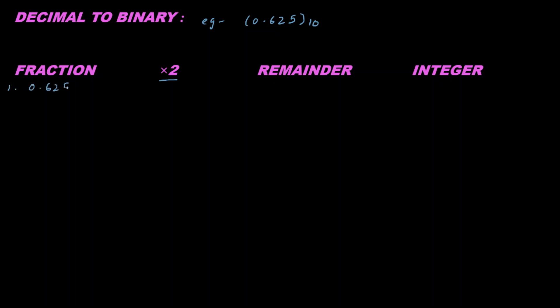First step: write 0.625 here. Multiply 0.625 by 2, we get 1.250. So 0.250 is remainder and 1 is integer. In the second step, write 0.250 as the remainder part, then multiply by 2 to get 0.500. The remainder is 0.5 and integer is 0.